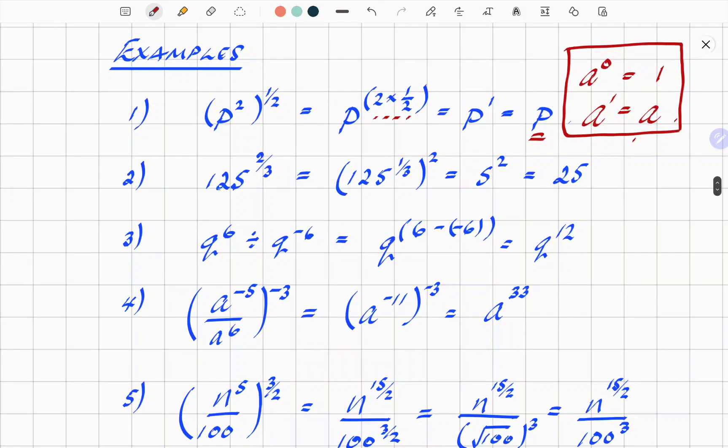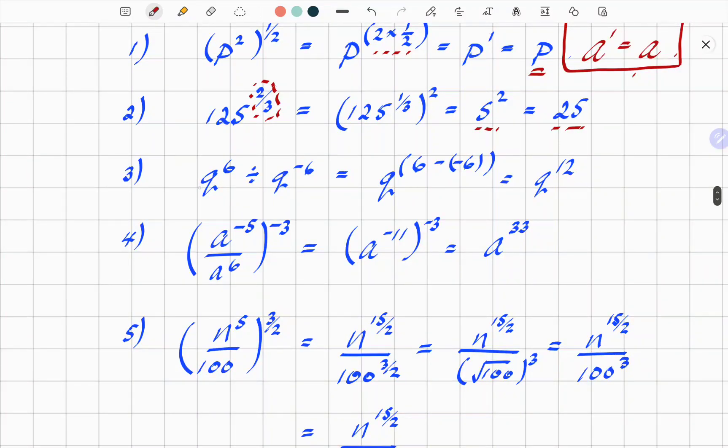Number 2, 125 to the power 2 thirds. I'm going to now split that fractional power into 125 to the power 1 third, and then all of it squared to the power 2. You can split the fraction into 1 over 3, the power that is 1 over 3, and then the 2 on the outside. Cube root of 125, we've already seen, is 5. So, that is the same as 5 squared, and therefore 25. And another one, number 3.